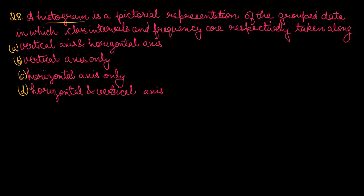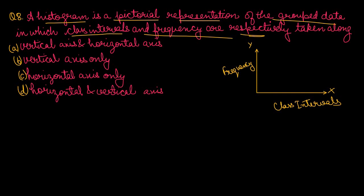Question number 8: A histogram is a pictorial representation of grouped data in which class intervals and frequency are respectively taken along — A) vertical and horizontal axis, B) vertical axis only, C) horizontal axis only, or D) horizontal and vertical axis? In a histogram, class intervals are taken horizontally and frequency is taken vertically. So class intervals and frequency are respectively taken along horizontal and vertical axis. Option number D is the right one.